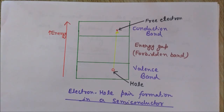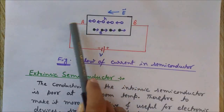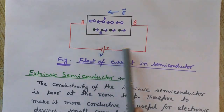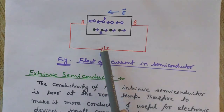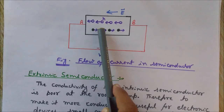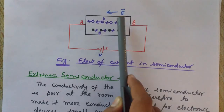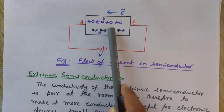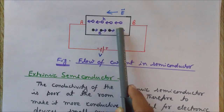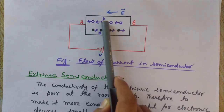This diagram shows an intrinsic semiconductor connected externally by a voltage source V. With this polarity of the voltage source, the direction of the electric field is towards the left side. Since electrons are negatively charged and holes are positively charged, the force on the electrons is opposite to the electric field direction, and the force exerted on the holes is in the direction of the electric field.